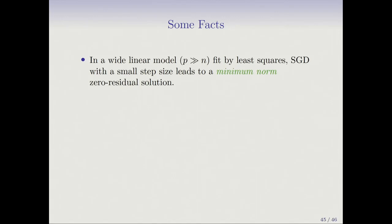In a wide linear model — where p is much bigger than n — if you fit by least squares using stochastic gradient descent with a small step size and keep going, that leads to a minimum norm residual solution. This ties stochastic gradient descent, going all the way to zero residual, to the minimum norm solution — i.e., the solution with the minimum sum of squares of the betas.